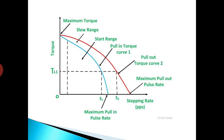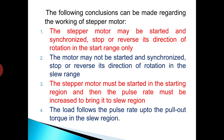The characteristic between the pull-in torque and zero pulse rate per second is known as the start range. The characteristic to the left of the vertical dotted line is known as the low pulse rate region and is never used in practice. This is due to rotor oscillations caused by lack of damping at very low pulse rates, so the actual start range lies between the dotted vertical line and the pull-in torque curve.